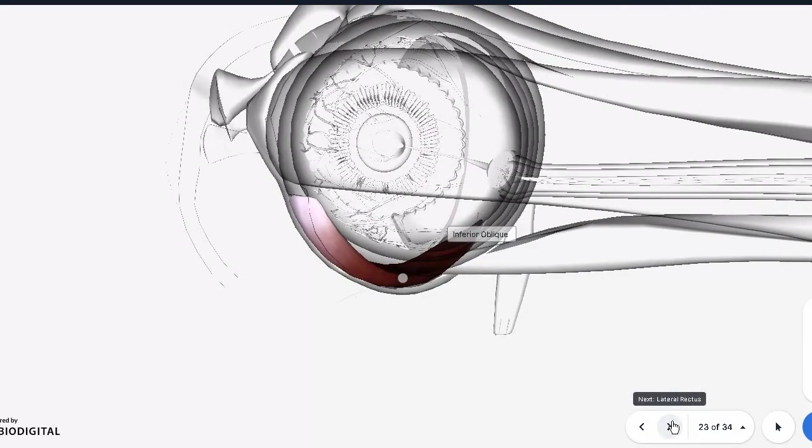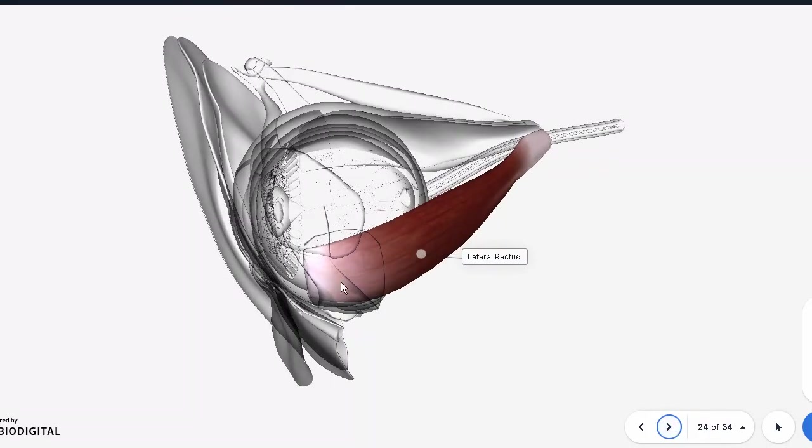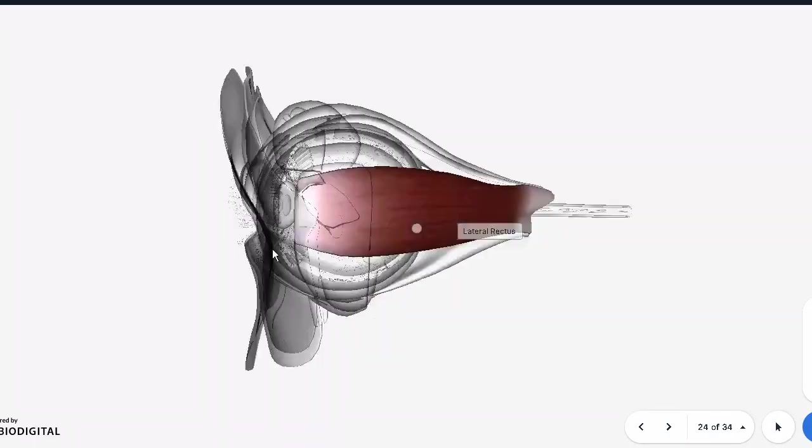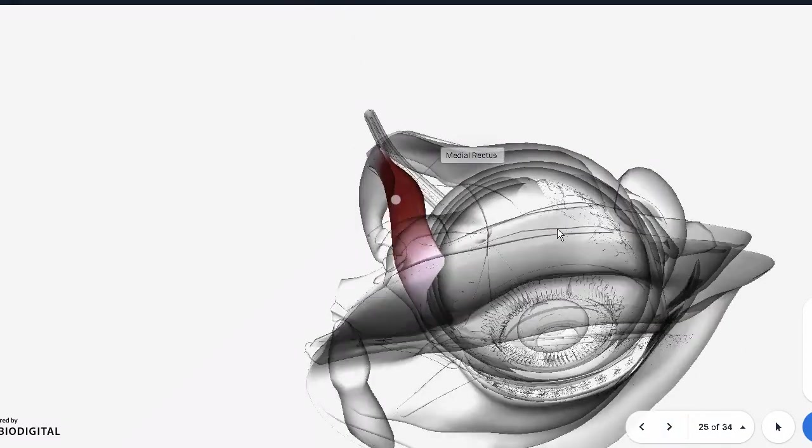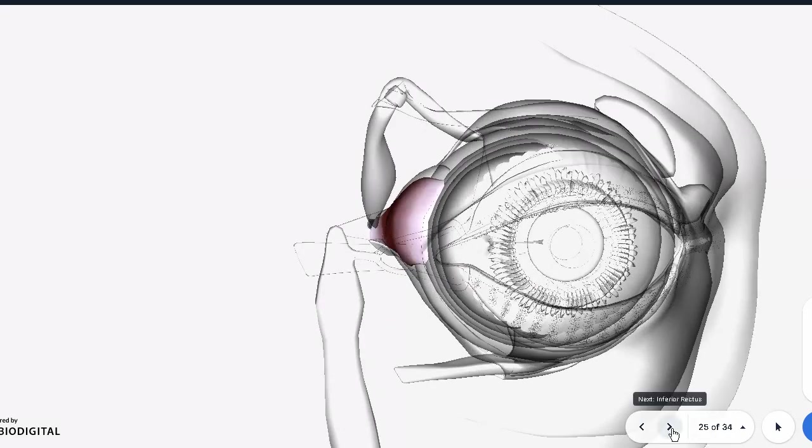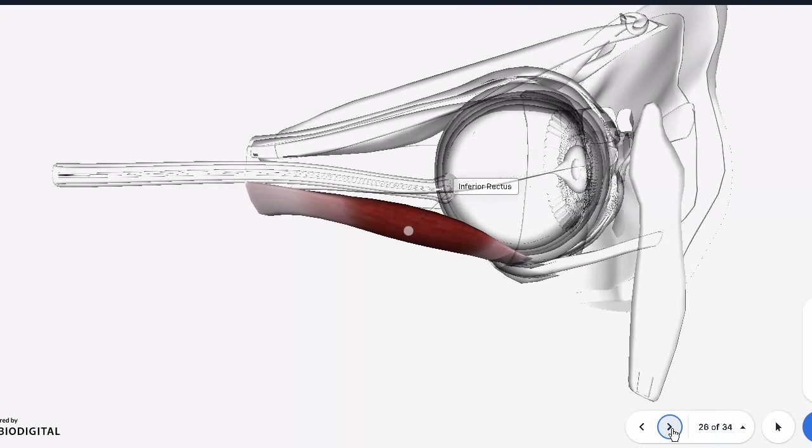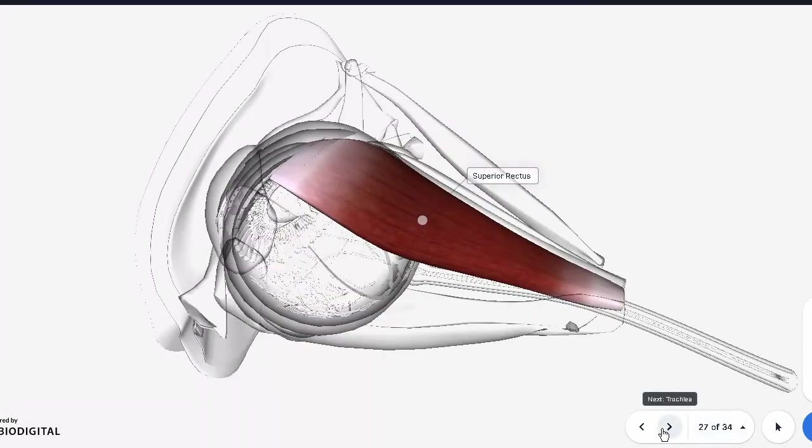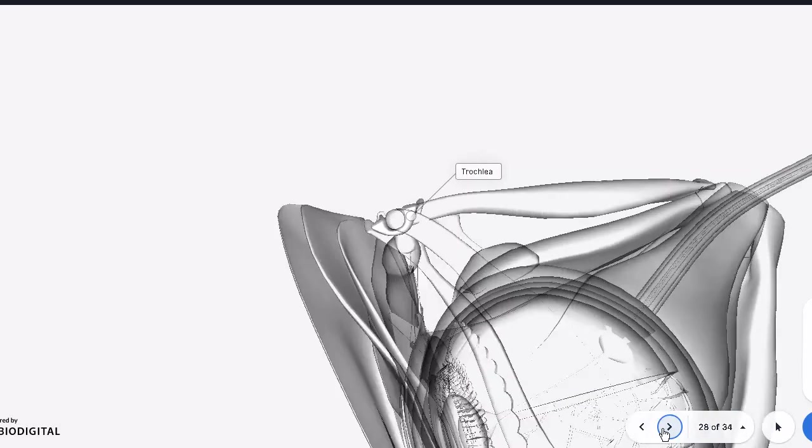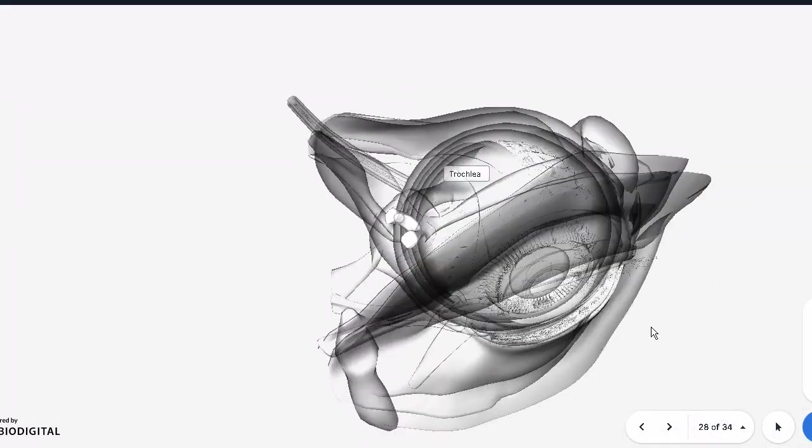And the remaining, you know, lateral rectus for lateral deviation of the eye, medial rectus for medial deviation of the eye, inferior rectus looking downwards, and superior rectus, which is right below levator palpebrae, looking upwards. And the trochlea, as I mentioned previously.